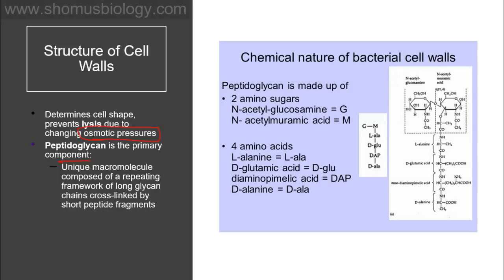Peptidoglycan has a unique macromolecular structure composed of repeating long glycan chains cross-linked by short peptide fragments. The chemical nature of the bacterial cell wall shows that peptidoglycan is made up of two amino sugars: N-acetylglucosamine (NAG) and N-acetylmuramic acid (NAM). These two are the major amino sugar components of the peptidoglycan layer.